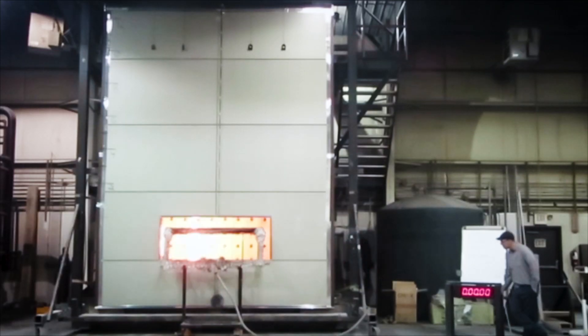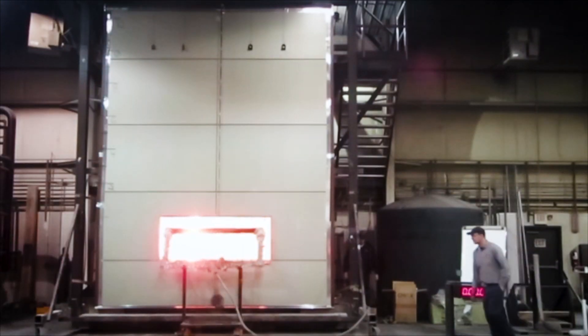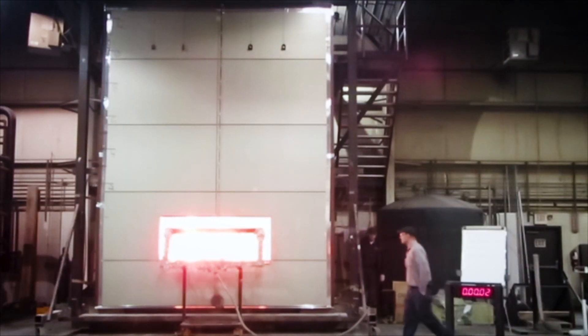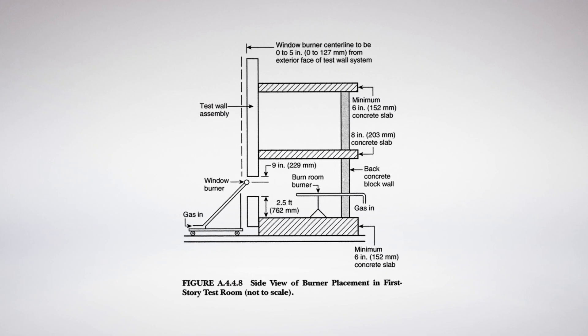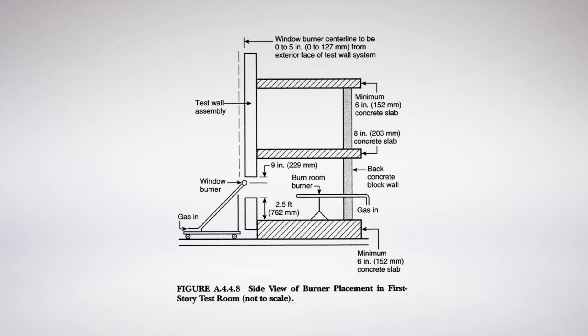NFPA 285 is the standard test method used to evaluate the fire performance of combustible materials used in building construction in exterior walls. A big key is that NFPA 285 is an assembly test — it is not a component test.